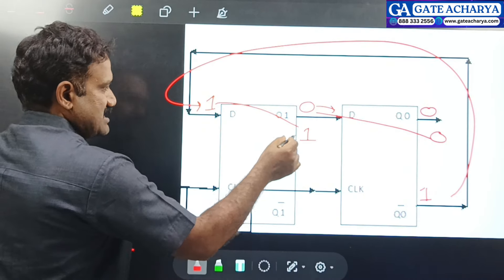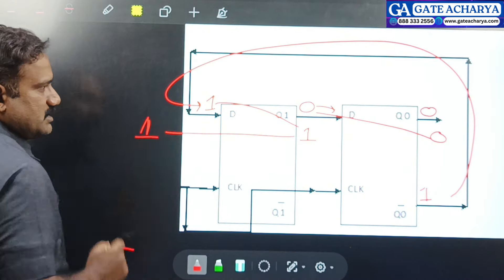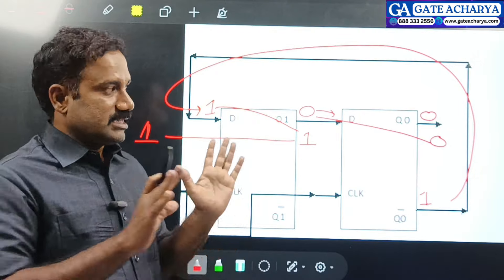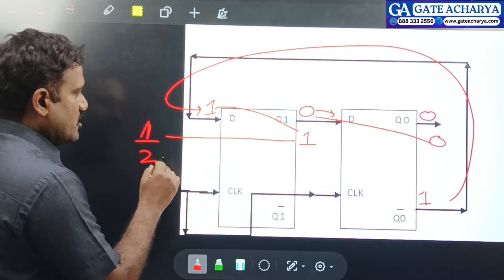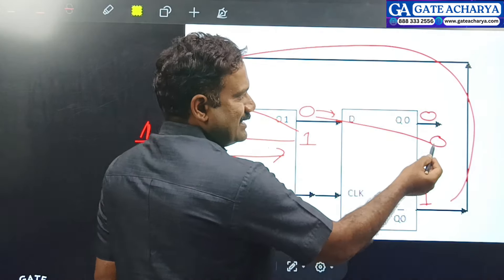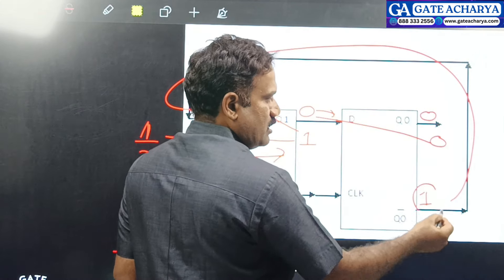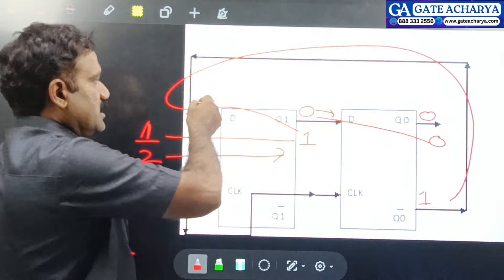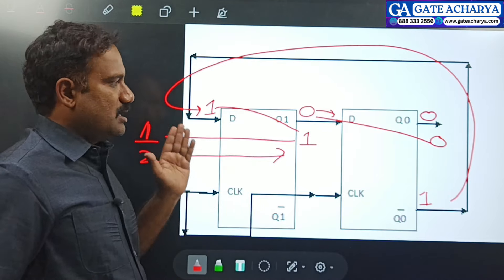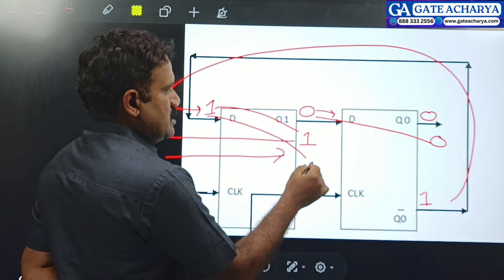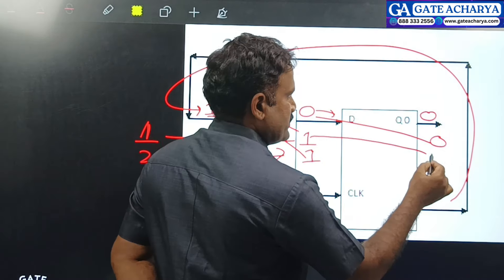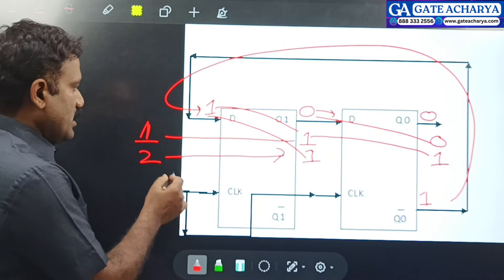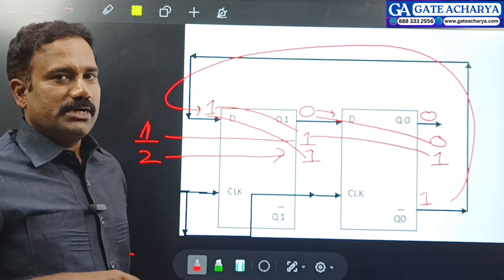While applying the first clock signal, the data 1 will be moved into the output of the first flip-flop, and 0 will be moved into the output of the second flip-flop. So after the first clock, we get Q1=1, Q0=0. Before applying the second clock, input is still 1, so again it is shifted. While applying the second clock signal, both outputs become 1, 1.